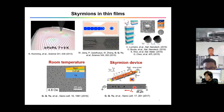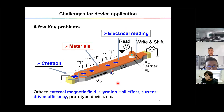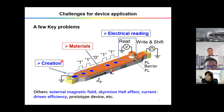In this racetrack, skyrmions can be electrically created and manipulated. From our group, we are interested in device fabrication. For device fabrication we need good materials with very small and stable skyrmions, the ability to create skyrmions electrically, and the ability to read the skyrmion using electrical means. Today I'm going to talk about these three aspects, though there are many other problems to be solved.